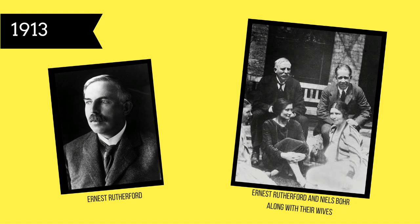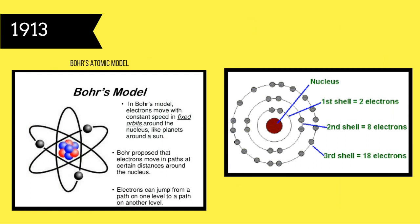In 1913, on the basis of Ernest Rutherford's theories — a New Zealand physicist who came to be known as the father of nuclear physics — Bohr developed and published his model of atomic structure, known as the Bohr model. This depicts the atom as a small, positively charged nucleus surrounded by negatively charged electrons that travel in circular orbits around the nucleus, similar in structure to the solar system, but with electromagnetic forces using attraction rather than gravity.